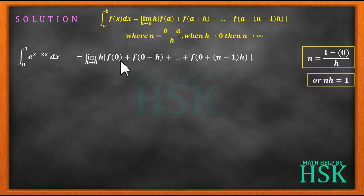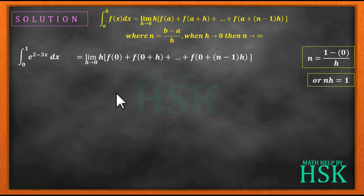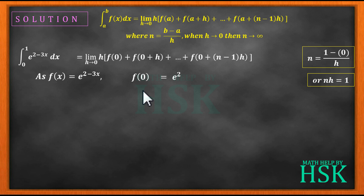The most important part — about 50 percent of this question — is the evaluation of this total correctly, and the other 50 percent is the calculation of the limit. Now since f(x) equals e to the power of 2 minus 3x, this means that f(0) is equal to e squared, placing x equal to 0.